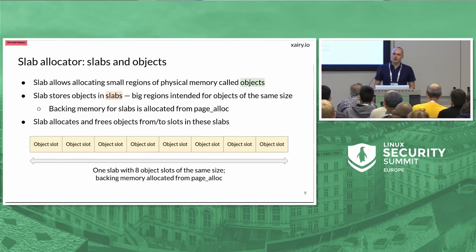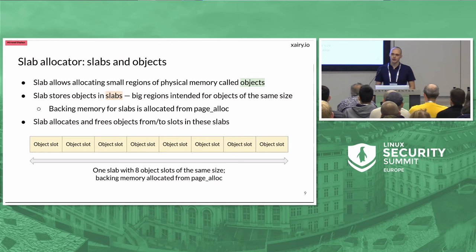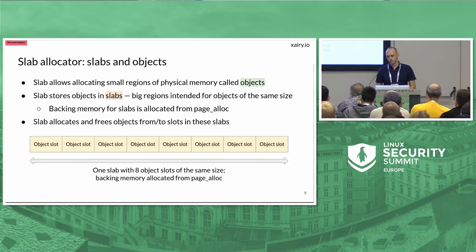I do want to cover one specific detail about the idea of the slab allocator, and I want to explain where the word 'slab' comes from. The slab allocator manages memory in big chunks called slabs, which are obtained from the page allocator. It splits those slabs into smaller object slots. Whenever the kernel requests memory to be allocated, it gets allocated from one of these object slots. Inside the kernel you have many different caches, each cache has its own slabs, and the slabs are split into objects of the same size. When you call kmalloc you get a pointer to one of these object slots.